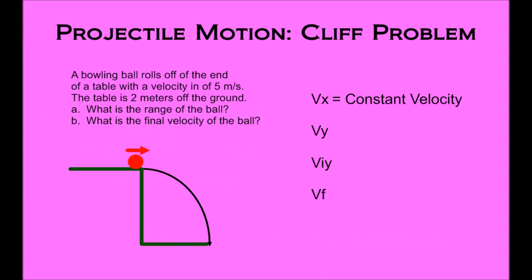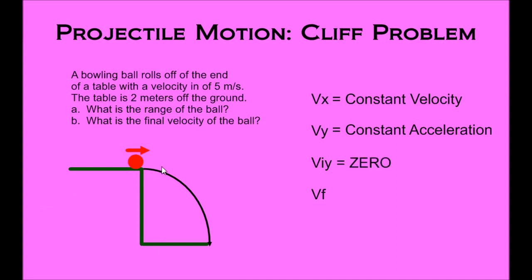The projectile motion cliff problem has a couple of different characteristics we need to understand in order to solve it correctly. First, as the ball rolls off the table, the velocity in the x direction stays constant — this 5 meters per second stays consistent because nothing else is influencing the ball in the x direction. Next, in the y direction, the velocity is going to have constant acceleration due to gravity. As the ball follows this curved path, it accelerates. Third, as the ball exits the table, the initial velocity in the y direction is going to be zero.